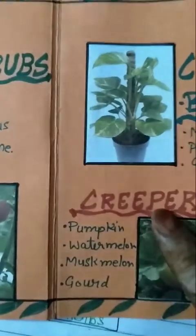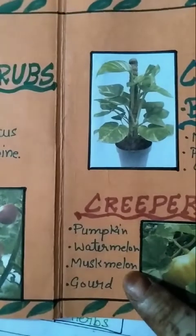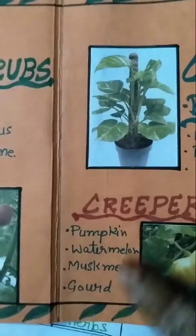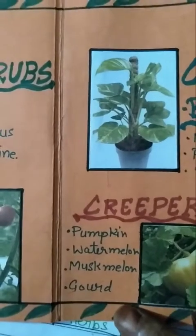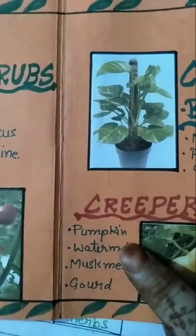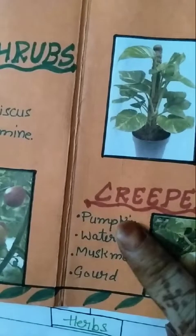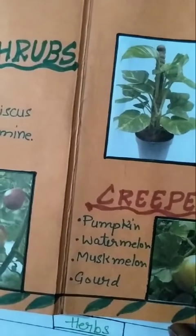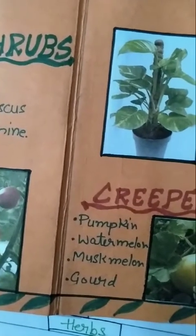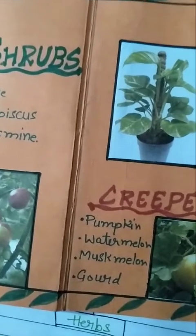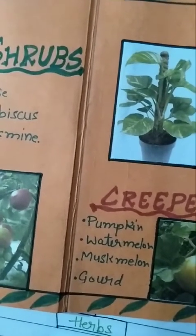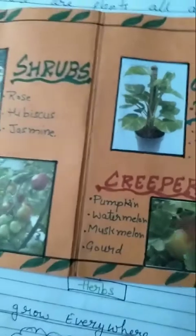Plants like pumpkin, watermelon, and gourd are examples of creepers. These fruits and vegetables grow along the ground because they are heavy. So these are some examples of creeper plants.